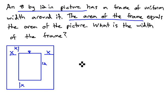We are told that the area of the frame equals the area of the picture. So let's look at the area of the picture. The area of the picture is, we've got a length of 8 and a width of 12. 8 times 12 is 96. That means the picture has an area of 96.